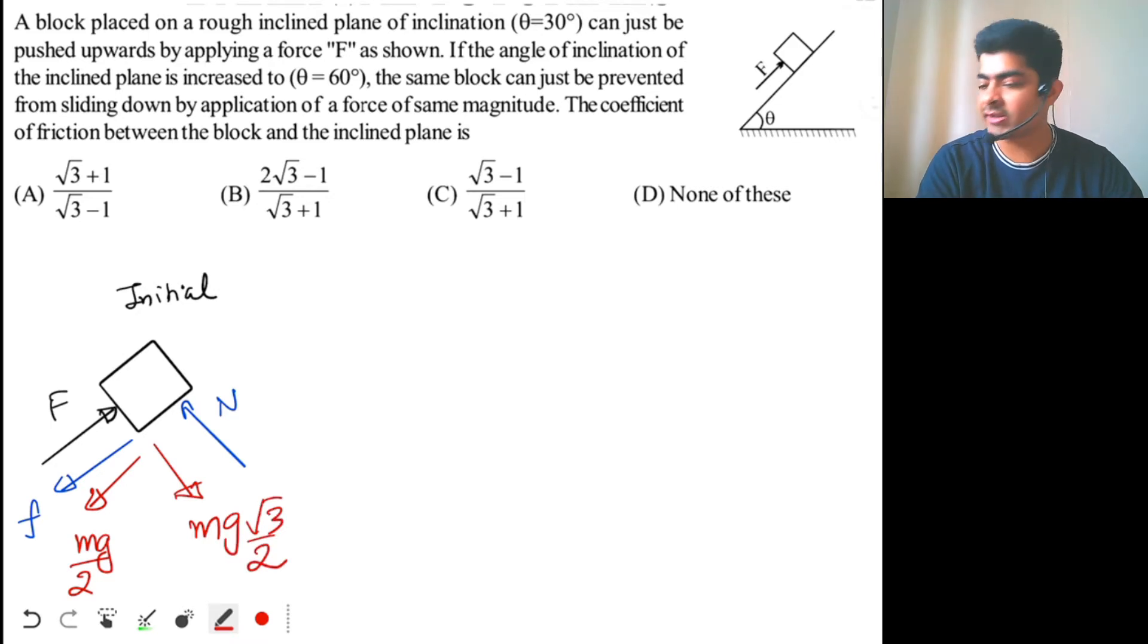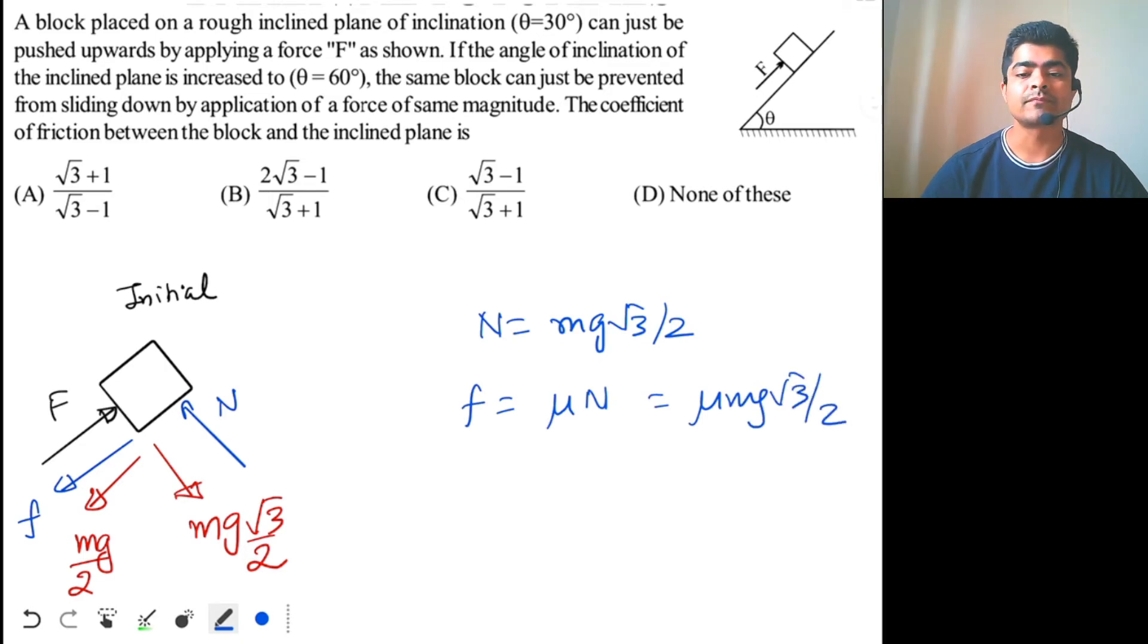So this is the FBD for the initial situation when the block can just be pushed upwards. So n is equal to mg into root 3 by 2. And therefore since the block is just moving, friction will be mu n. So this will be mu mg root 3 by 2.